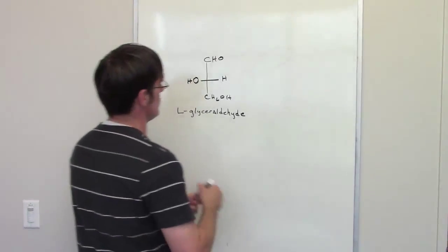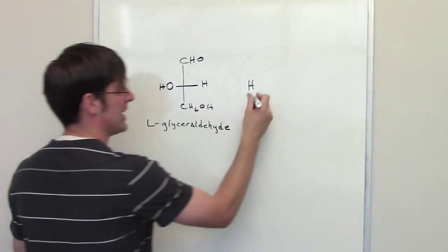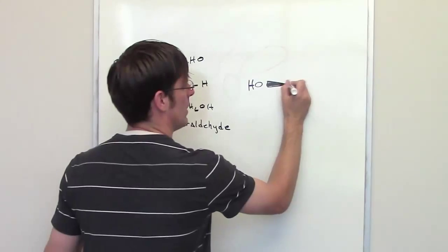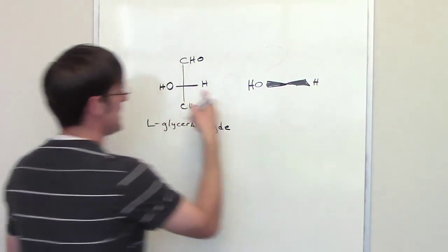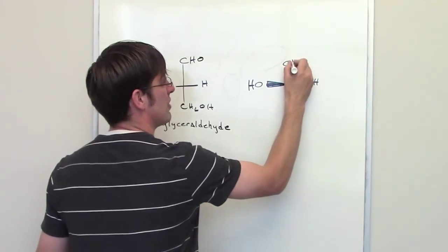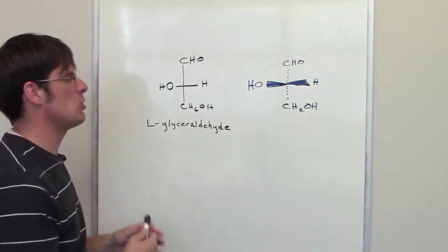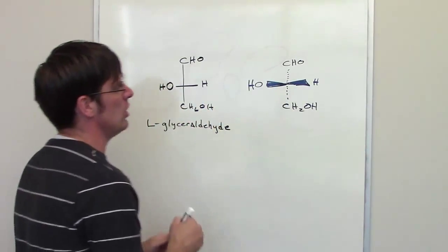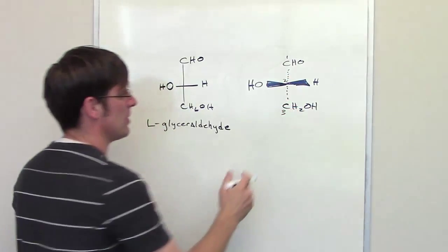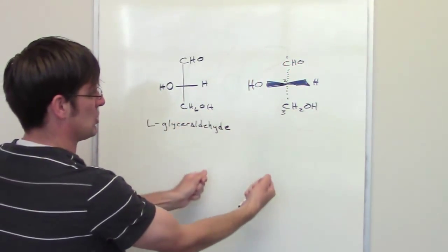When we see a Fischer projection, we have to remember that three-dimensionally, all of the things along the horizontal line are pointing up towards us - they should be drawn as little wedgies. The things along the vertical axis are pointing away from us, like little dashies. That presents a challenge when we have to convert that into a sawtooth projection. What I try to do is look along the carbon chain.